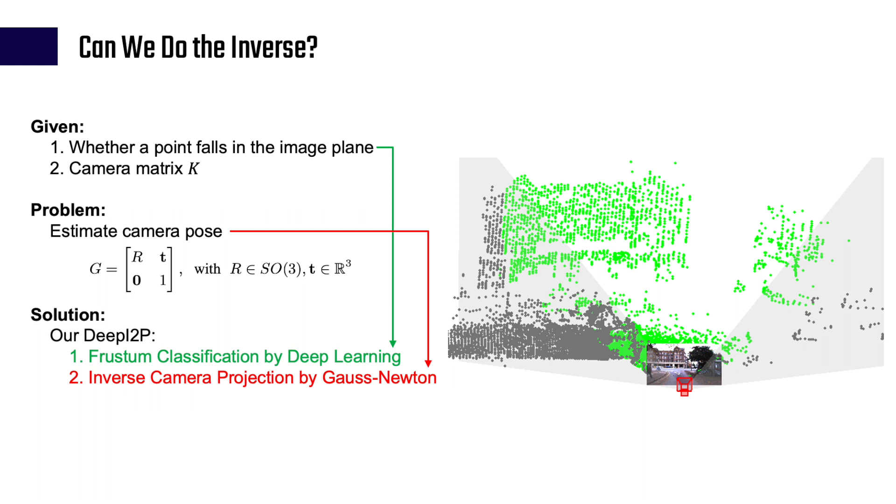Second, assume we know whether a 3D point falls inside the image or not, how do we estimate the camera pose? To solve it, we propose the inverse camera projection solver using Gauss-Newton optimization.